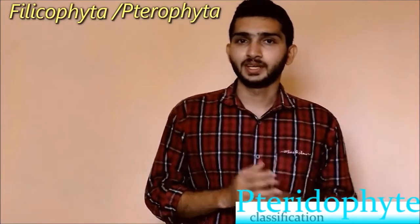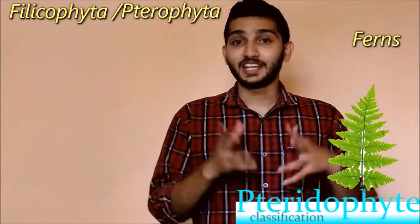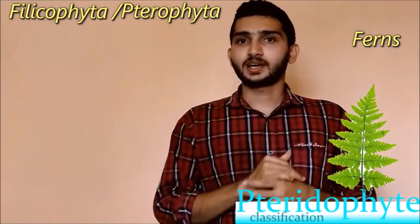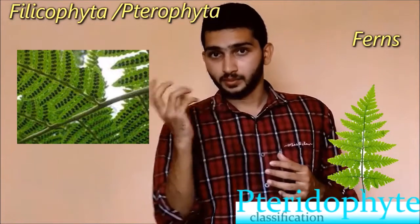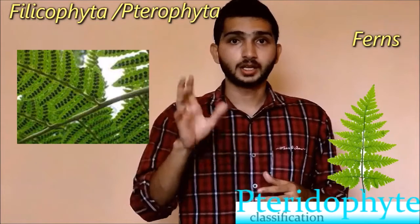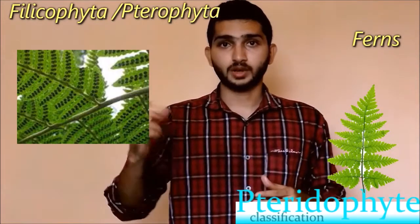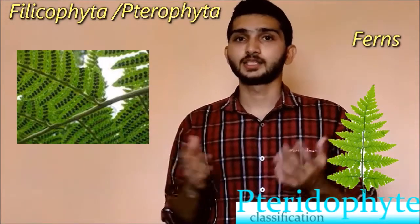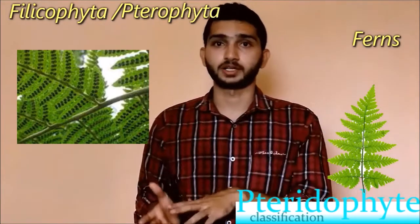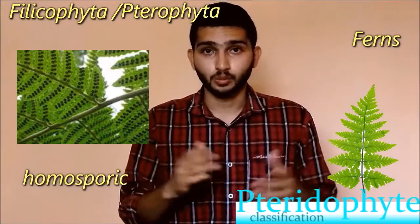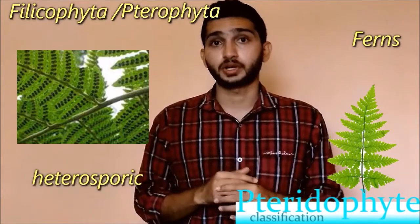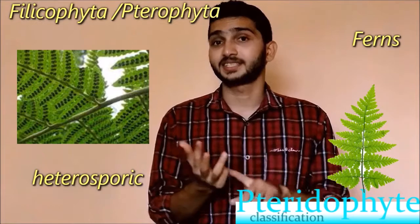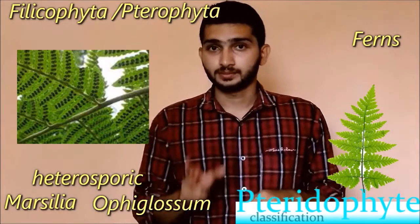Filicophyta, also known as Pterophyta, are commonly known as ferns — their leaves appear fan-shaped. The plant body is differentiated into root, stem and leaves. Spores are formed under the sporophyll. They are having homosporic type and heterosporic type. Examples for homosporic type are Dryopteris, Pteris, and Adiantum. Examples for heterosporic type are Marsilea and Ophioglossum.